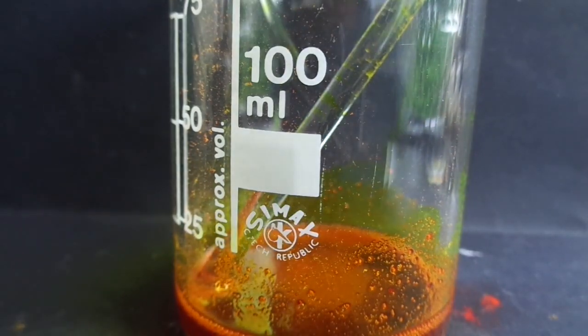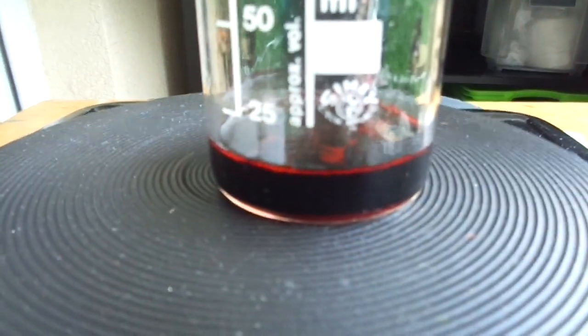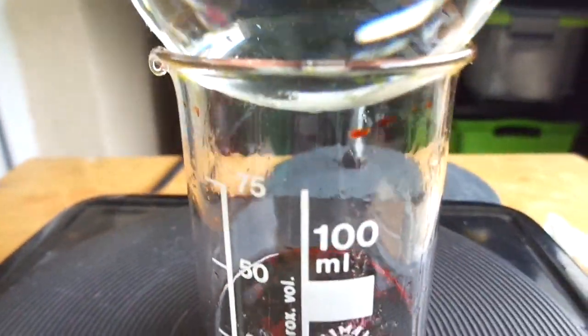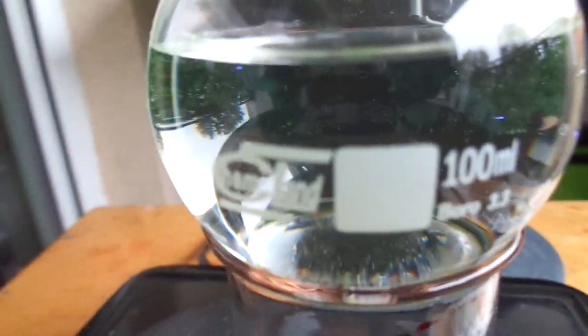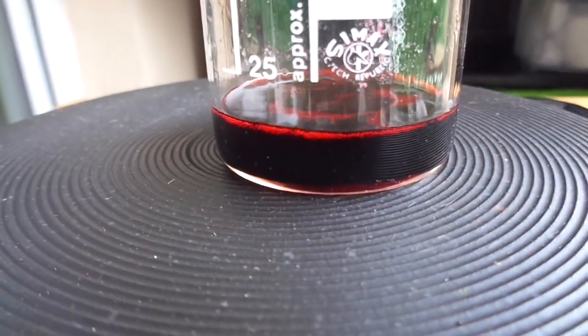Now we're going to heat the mixture on a hot plate. I just didn't want to set up a reflux column, so I just set up this simple reflux with a cold water flask on the top. As you can see it's condensing, and I will let it reflux for some time.